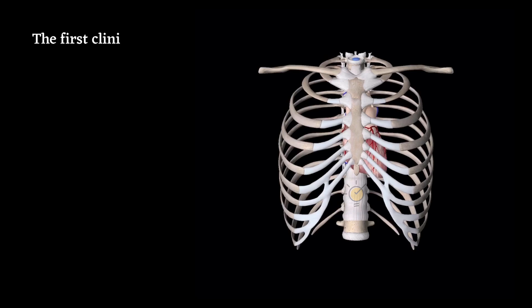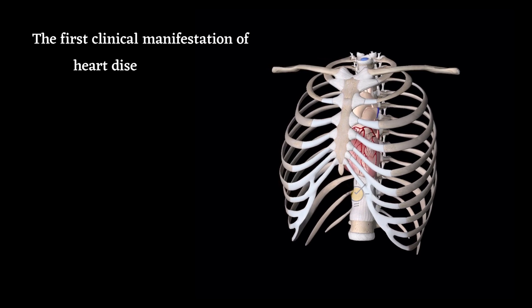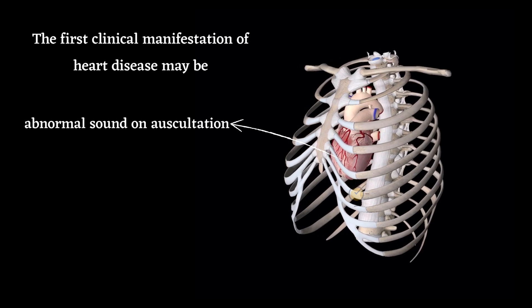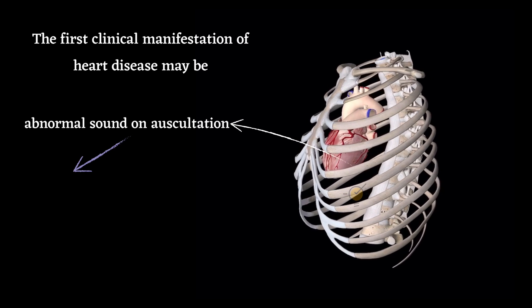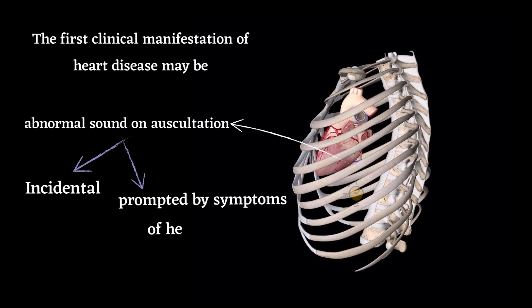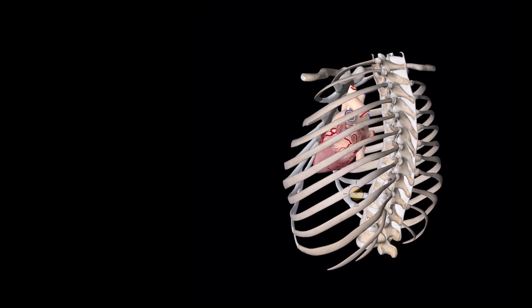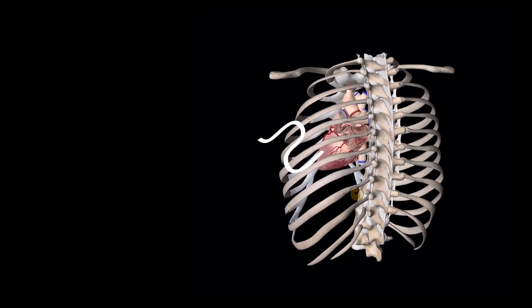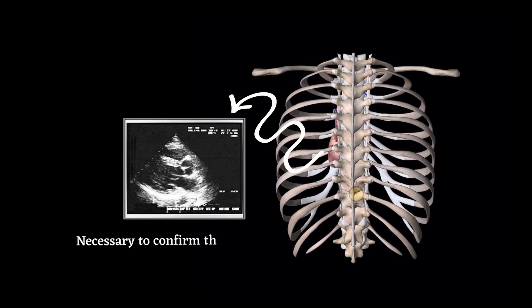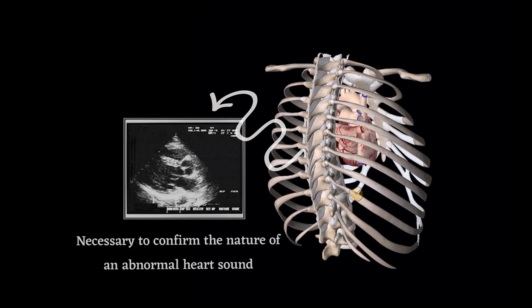The first clinical manifestation of heart disease may be the discovery of an abnormal sound on auscultation. This may be incidental or may be prompted by symptoms of heart disease. Clinical evaluation is helpful, but an echocardiogram is often necessary to confirm the nature of an abnormal heart sound.